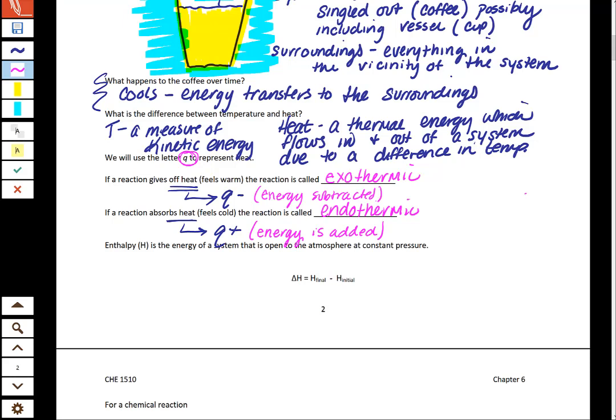One final thing before we end this video is when we're talking about energy, we're also going to use this term enthalpy. The abbreviation for that is a capital H. And this is just the energy of a system that is open to the atmosphere at constant pressure. When we're talking about chemical reactions, a lot of times we'll talk about H instead of Q. And so a lot of times it gets really confusing because people will be like, aren't H and Q the same thing?